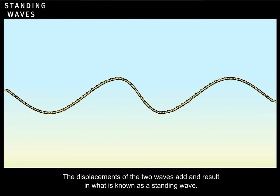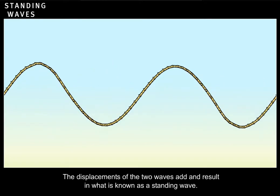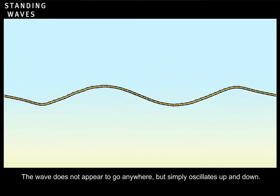The displacements of the two waves add and result in what is known as a standing wave. The wave does not appear to go anywhere, but simply oscillates up and down.